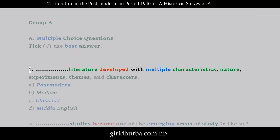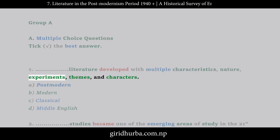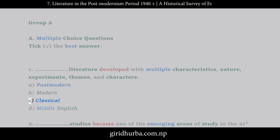Question 1: Literature developed with multiple characteristics, nature, experiments, themes, and characters. A. Postmodern. B. Modern. C. Classical. D. Middle English.